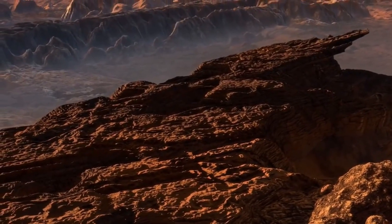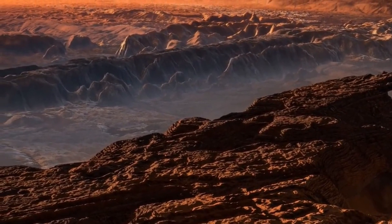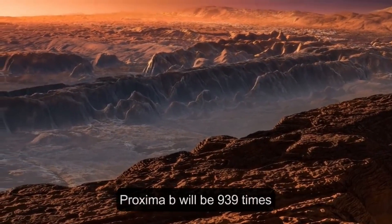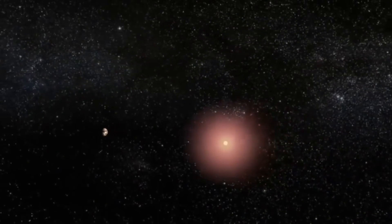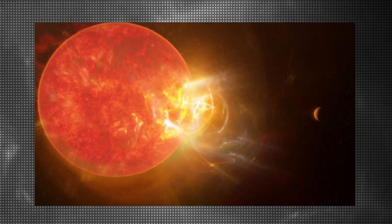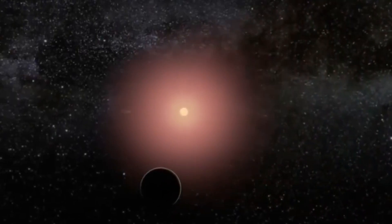The density of Proxima b is 40 times that of the sun. This means that Proxima Centauri's tidal force on Proxima b will be 939 times greater than the sun's tidal force on Earth. As a result, Proxima b is most likely tidally locked to Proxima Centauri, presenting the same face to the star at all times.